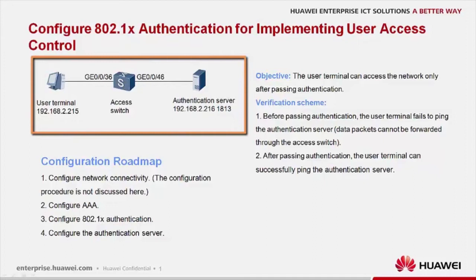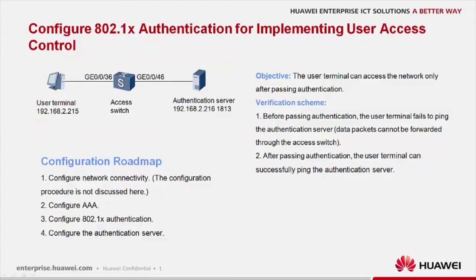Here is a simple networking diagram. This is a user terminal connected to an authentication server through an access switch. A user terminal can access the network only after passing authentication. Before passing authentication, a user terminal fails to ping the authentication server.